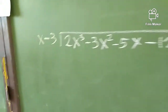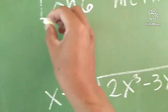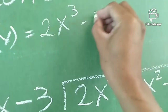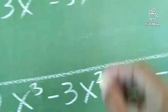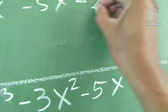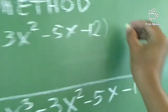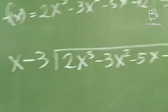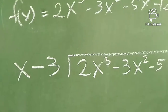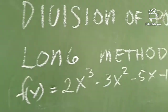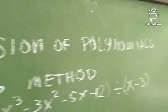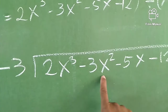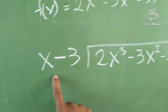Ganon din po ang gagawin natin dito sa ating long division. Okay, ganyan po yung itsura niya. Function of x is equals to 2x cubed minus 3x squared minus 5x minus 12, then divided by x minus 3. Yan po ang klase ng division na gagawin natin — Division of Polynomials, Long Method. So: 2x cubed minus 3x squared minus 5x minus 12 divided by x minus 3.